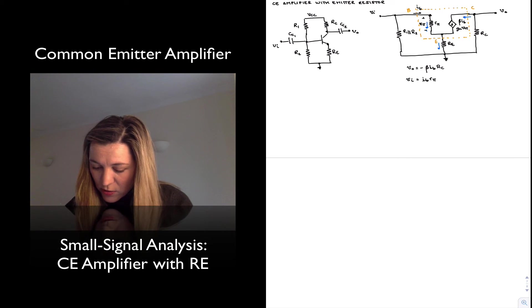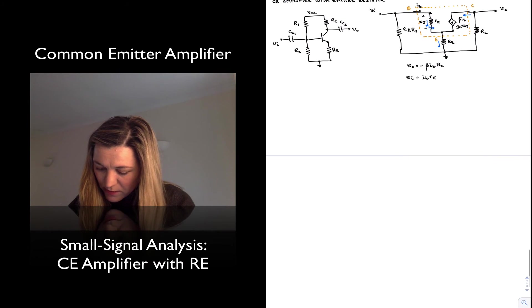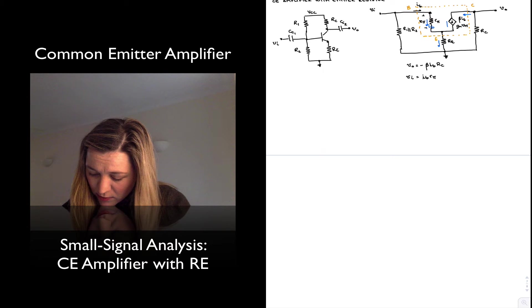And then for R_E, notice that you have, so let me be more clear, this is I_B flowing through here, but through the emitter resistor we have both I_B and beta*I_B which is coming from this branch.